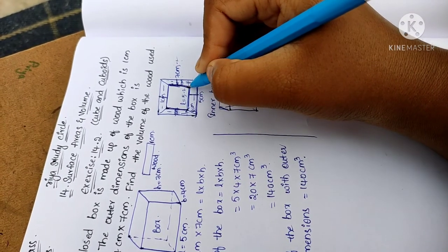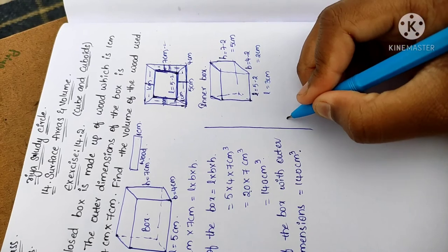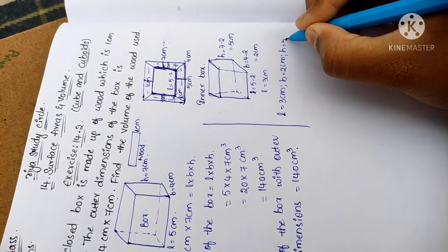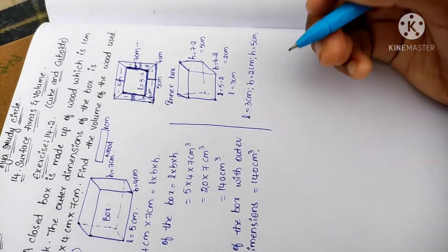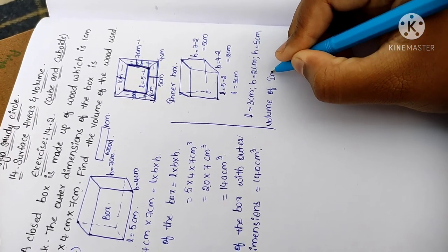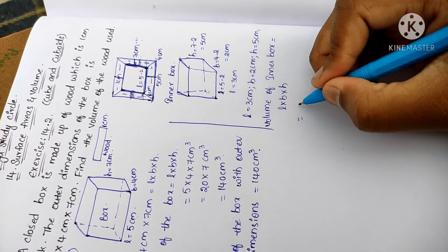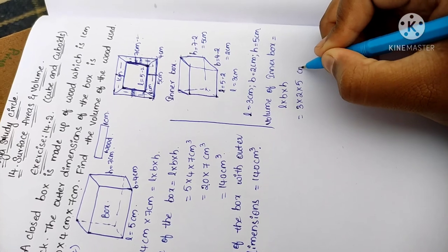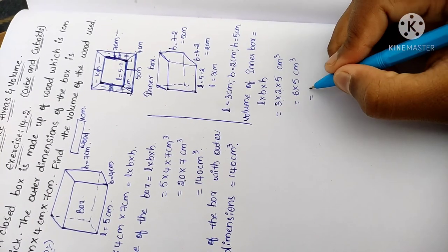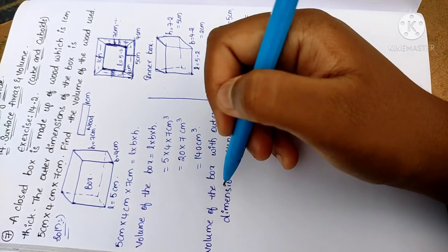The inner dimensions are L = 3 cm, B = 2 cm, and H = 5 cm — these are the inner part of the box. The volume of the inner box equals length × breadth × height = 3 × 2 × 5 cm³. Three twos are 6, into 5 gives 30 cm³. So the inner volume of the wooden box is 30 cm³.